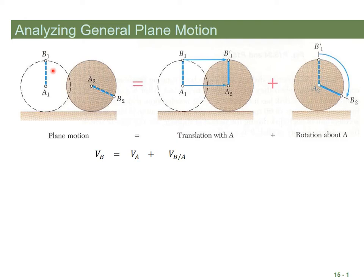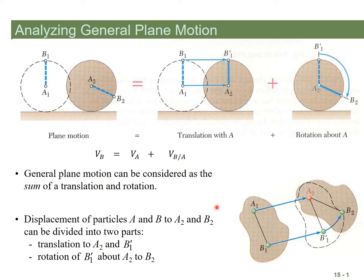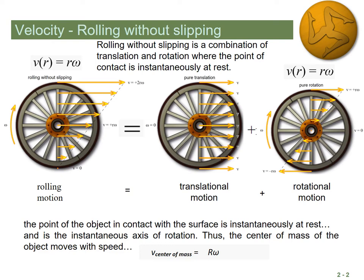If we want to see what point B is doing — it starts here and ends up here — that motion is a combination of translation, VA, plus rotation, the velocity of B relative to A. The plane motion of any particle is translational motion plus rotation, and these two add together to give the overall picture. You just have to find the center of rotation, then add those three vectors together.